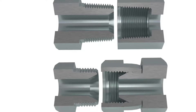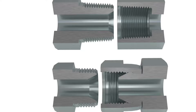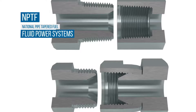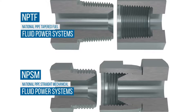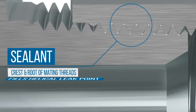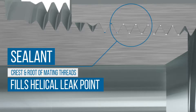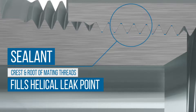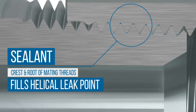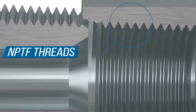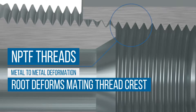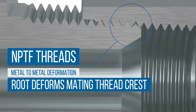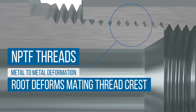Two of the most common variations of this pipe thread standard are NPTF and NPSM thread styles. Where traditional NPT threads have a small clearance between the crest and the root of the mating threads, requiring the use of sealant, the NPTF thread root does not allow this clearance. It contacts and deforms the mating thread crest.